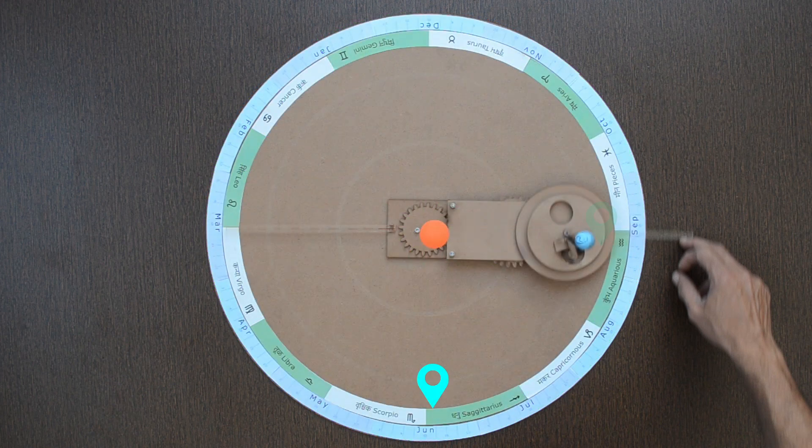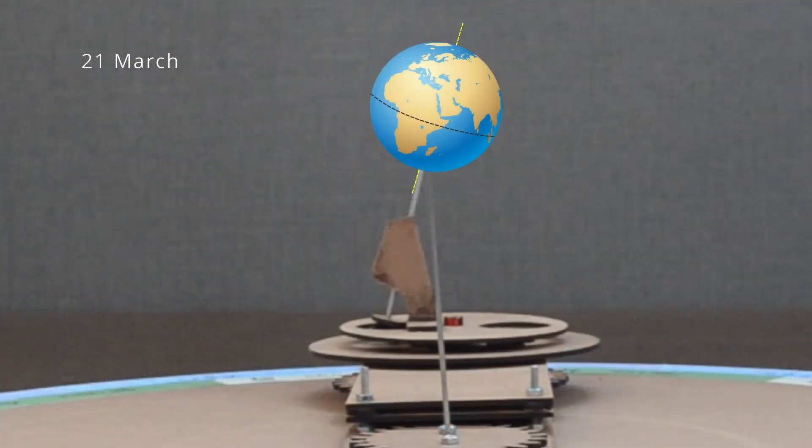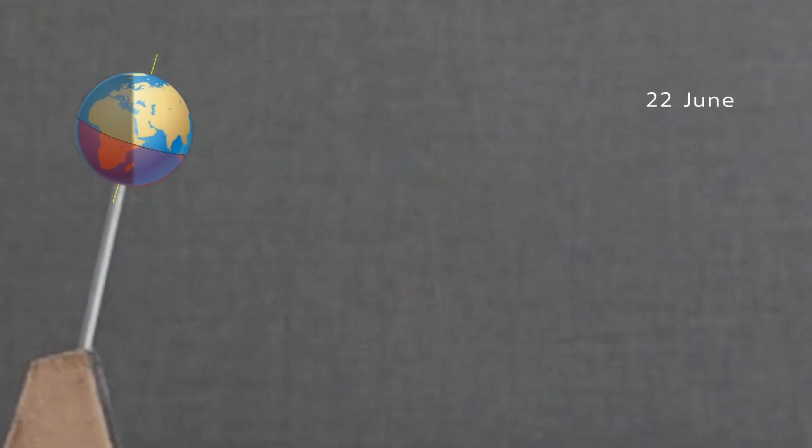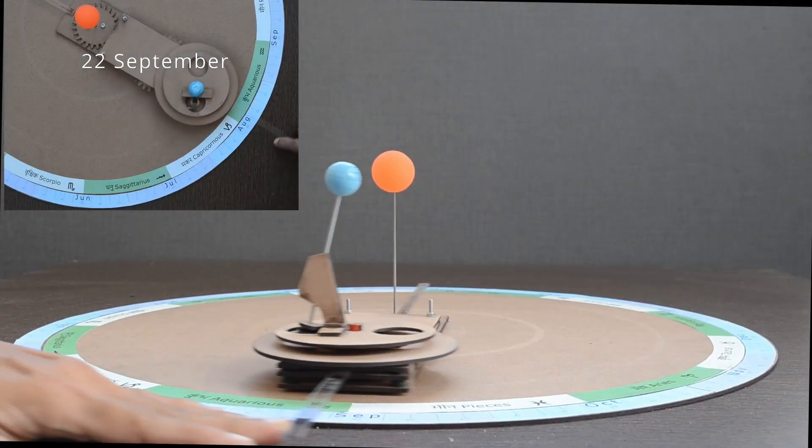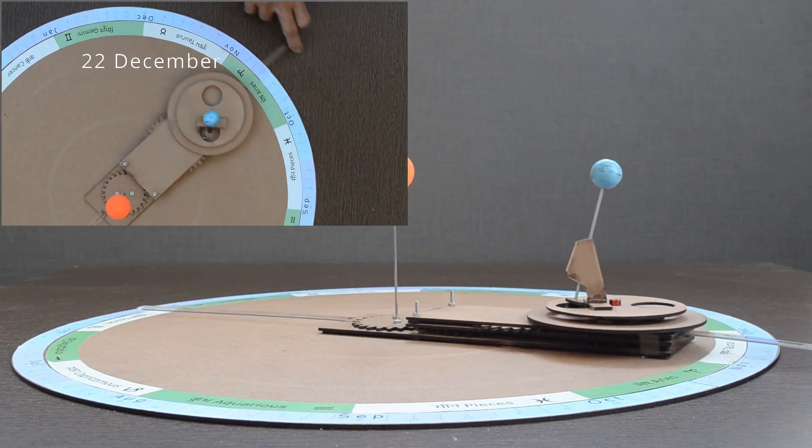The position of the Earth along its orbit is also decided, like 21st March, 22nd June, 22nd September, and 22nd December.